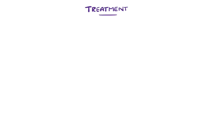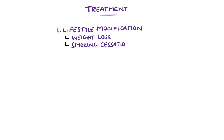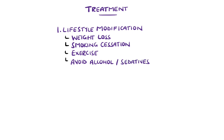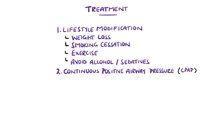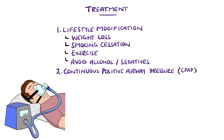Lifestyle modification is a crucial part of the treatment, including weight loss, cessation of smoking, exercise, and avoiding alcohol and medications like benzodiazepines, opiates, and sedating antidepressants. Continuous positive airway pressure is the primary treatment option and is commonly used, which involves wearing a mask to bed that generates pressure in the airway that helps keep it patent. However, up to 50% of patients stop using their devices within one year.